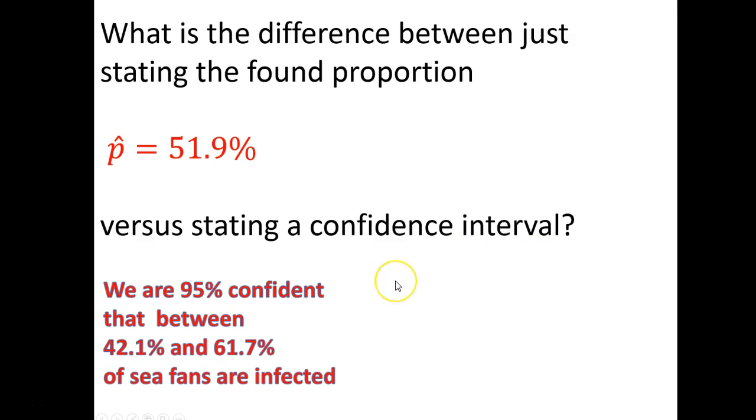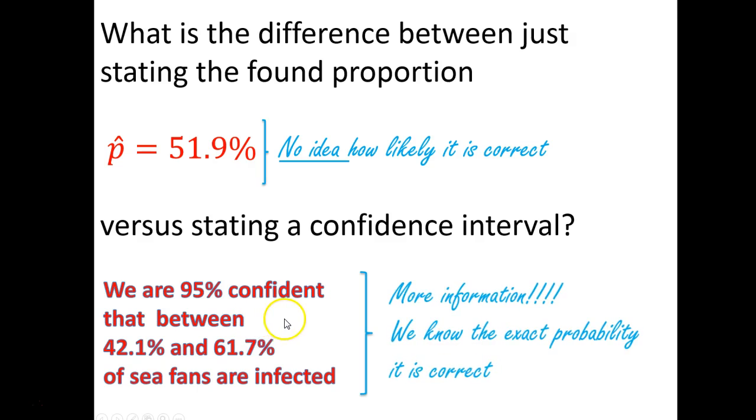So with that, I can now make a sentence. Now the difference is P hat is just a point, and I don't know the chance of this happening. I could say one study I got 51.9%. But now with a confidence interval, I can really let you know this is how sure I am. I now have some sense. I'm 95% confident that the true number of infected sea fans is between this and this. So I have much more information.